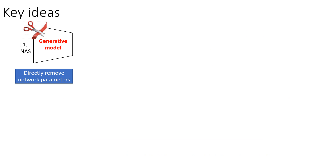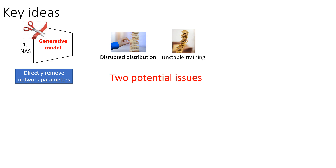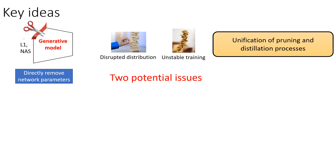A straightforward way to solve our problem is using CNN compression methods such as L1 and NAS to directly cut off parameters of the model. However, they potentially raise two issues. Firstly, they may disrupt the underlying distribution of GAN models, resulting in dropping its performance. Secondly, training GAN is unstable, and retraining GAN models brings new challenges. Hence, we unify the pruning and distillation processes to better compress a GAN model while retaining its performance.